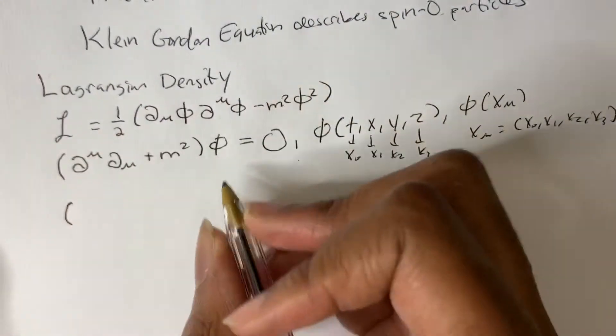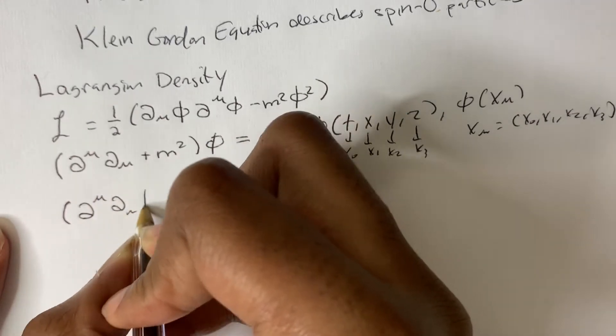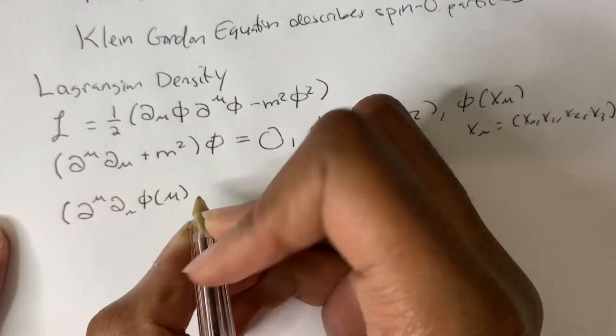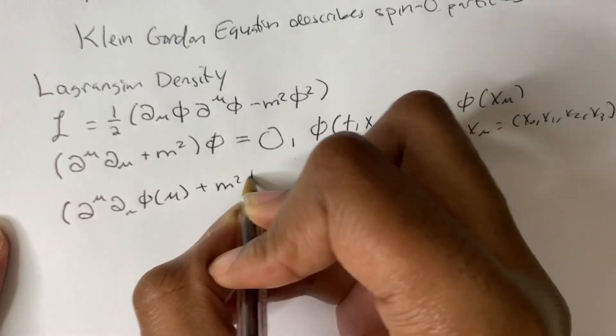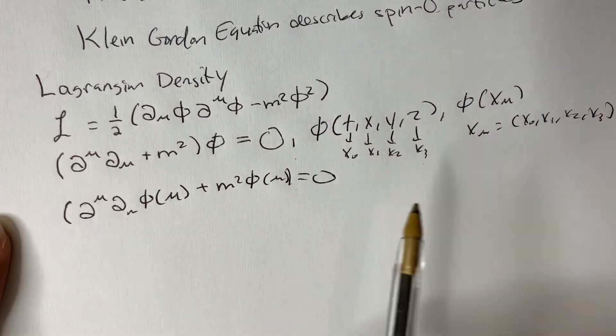So what we do is we first have to distribute this term in. So partial phi, which is phi of x mu, plus m squared phi of x mu, should equal 0.